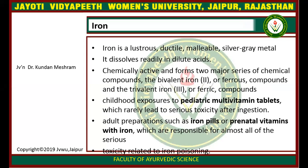Here, what is iron? Iron is a lustrous, ductile, malleable, silvery-grey metal which dissolves readily in dilute acids. It is chemically active and forms two major series of chemical compounds: bivalent iron, also called ferrous compounds, and trivalent iron, also called ferric compounds.